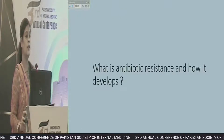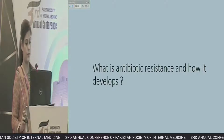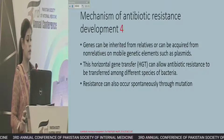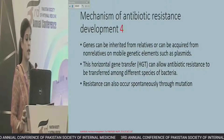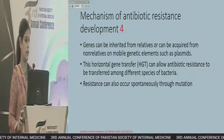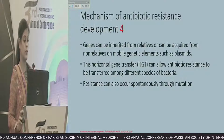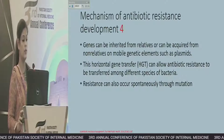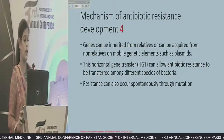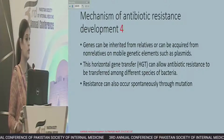What is antibiotic resistance and how does it develop? Genes can be inherited from relatives or can be acquired through mobile genetic elements such as plasmids. This horizontal gene transfer can allow antibiotic resistance to be transferred among different species of bacteria. Resistance can also occur spontaneously through mutations.